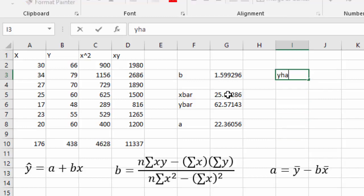That tells us our equation for y hat is equal to the a value 22.36 plus the b value 1.60 when we round to two decimal places times x.